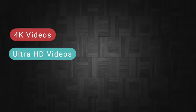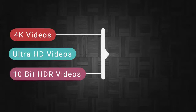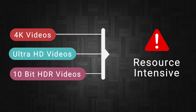4K, Ultra HD, and 10-bit videos are really resource-intensive. Without proper management, they can easily overtax a device's processing unit. Inefficient usage of resources is one of the major causes of blurriness in video playback, especially on mobiles and tablets.